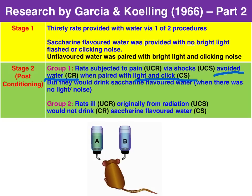The second group of rats that became ill from the radiation — that is, where the radiation was paired with the saccharine-flavored water — now avoided water that had that saccharine smell. Just the smell, the conditioned stimulus, of the saccharine-flavored water was enough and they would not drink it. Again, the association had been made between the smell of the saccharine water and actually becoming ill via that radiation as the unconditioned stimulus.